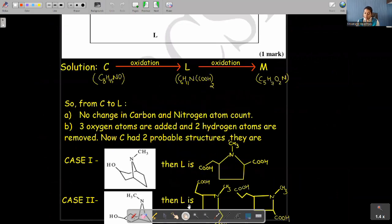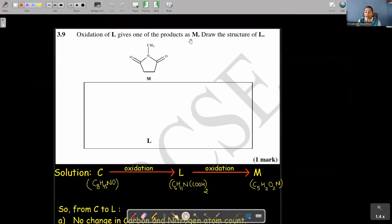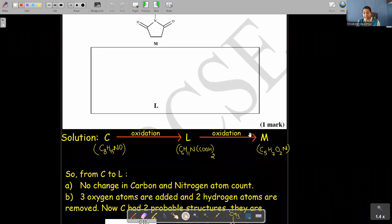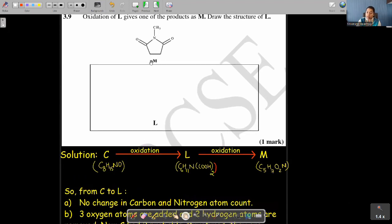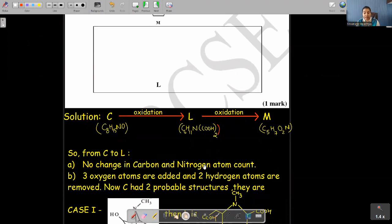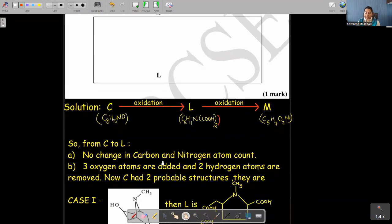Moving to question number 3.9. Now we are asked that oxidation of L gives one of the products as M. They have given the structure of M, draw the structure of L. We know that C on oxidation will give L and L on oxidation is giving M. Now it says that C is having a molecular formula of C8H15NO. L we have just calculated to be C6H11N(COOH)2. M, that M also we know that it is C5H7O2N from here. If you see the structure, from this structure, I calculated the molecular formula of M and written here. So from C to L when we go, we see that there is no change in carbon and nitrogen atom count. The carbon count and the nitrogen count remain same. If you compare the difference in oxygen and hydrogen count, you will find that three oxygen atoms are added when C is oxidized to L. And two hydrogen atoms are removed.